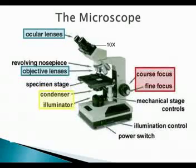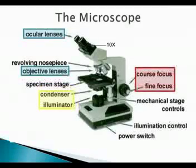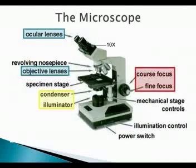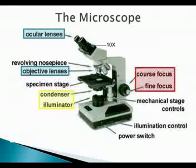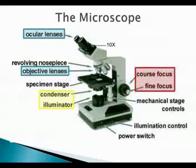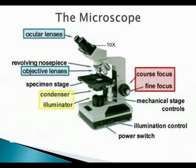If you look at the things in yellow, those are what control the amount of light that comes through. It's called the condenser — the one attached to the stage — and it controls the amount of light that gets through to the stage. The illuminator is the actual source of light, basically a flashlight. If you're looking through the microscope and it's too dark or too bright, you adjust the condenser or the illuminator to control how much light is accessing the slide.